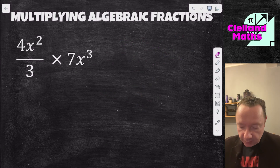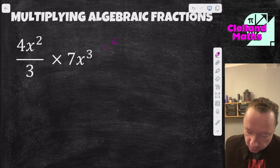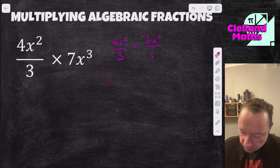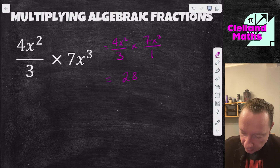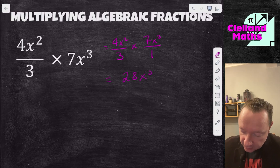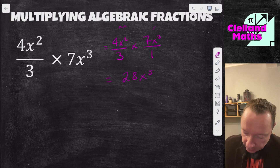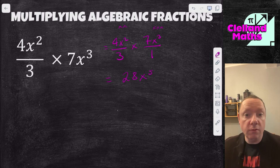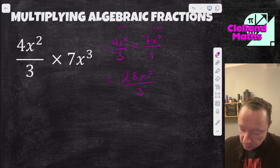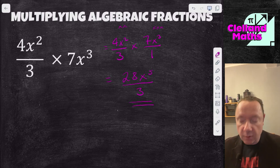Now 4x squared over 3 times 7x cubed. Think of this as 4x squared over 3 times 7x cubed over 1. No common factors, so 4 times 7 is 28. For x squared times x cubed, add the powers: 2 plus 3 is 5, giving x to the power of 5. The bottom is 3 times 1, which is 3. Does 3 go into 28? No. So the answer is 28x to the power of 5 over 3.